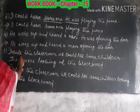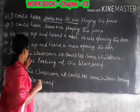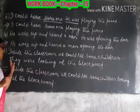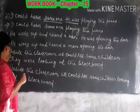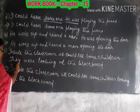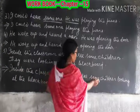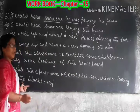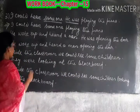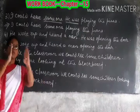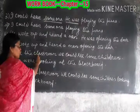Question number five: inside the classroom we could see some children. That is the first sentence. Second sentence: they were looking at the blackboard. Joined: we could see some children looking at the blackboard. The common part of the sentence is the same, and the other two we can join them.